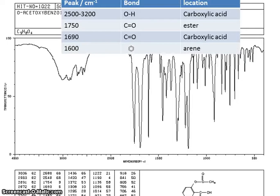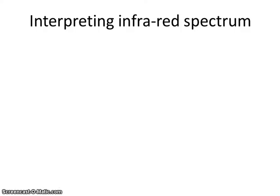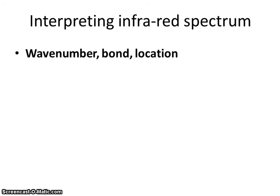And here's the kind of table that you would come up with. So here are the peaks that we are looking at. Here are the bonds that cause those peaks. And look here's the location of those peaks. And here's how you would write down an interpretation of that in an exam answer. Always specify the wavenumber, bond and location.